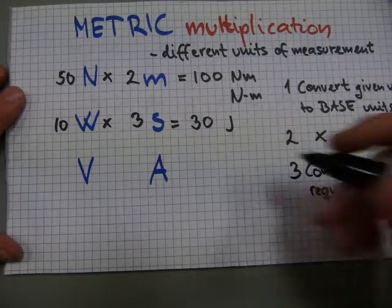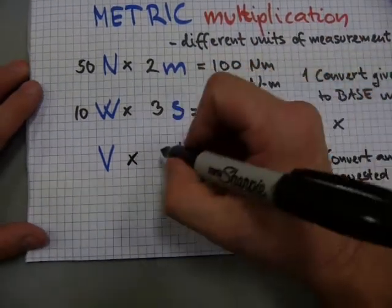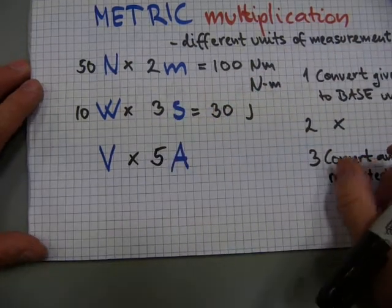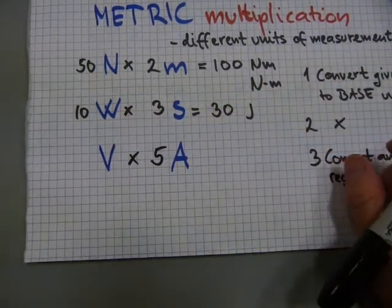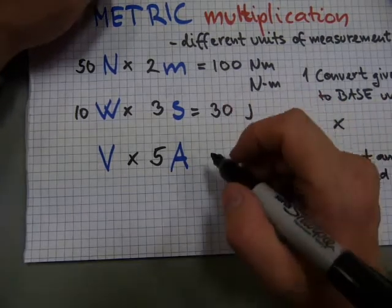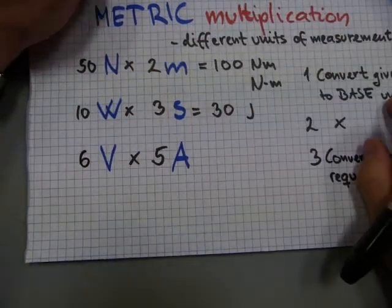Lastly, electrical power, for example. You have a current flow of, I don't know, 5 amps, and an electromotive force, or also known as electric potential of 6 volts.